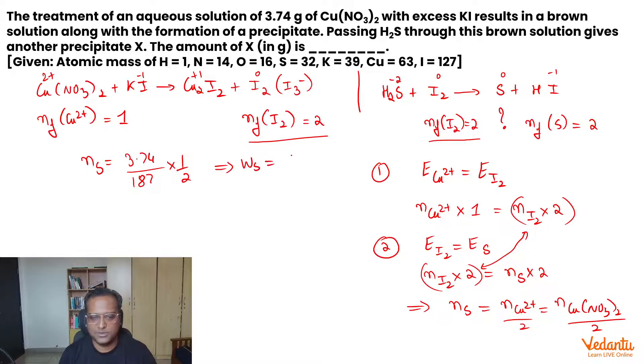So, weight of sulfur, you will simply multiply it with 32 into half into 32. This should give you your final answer.